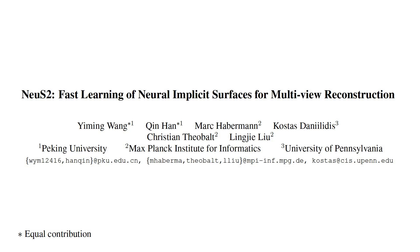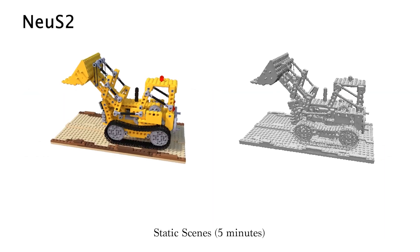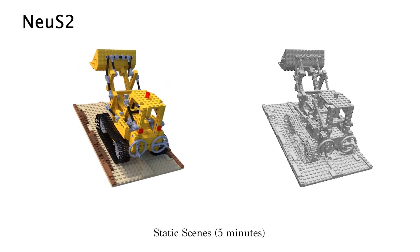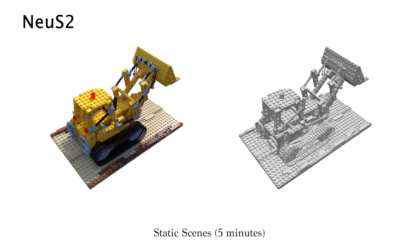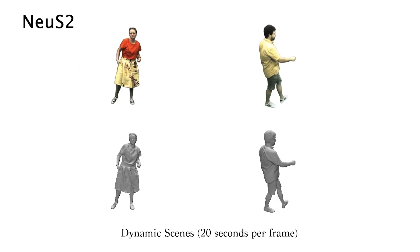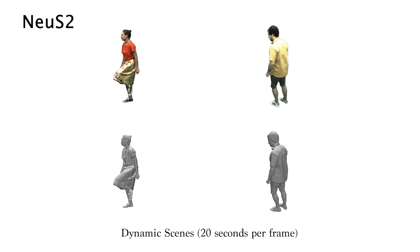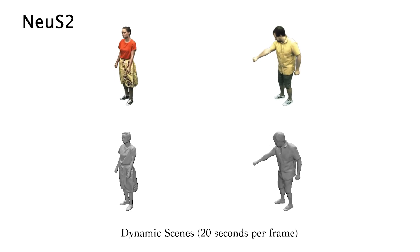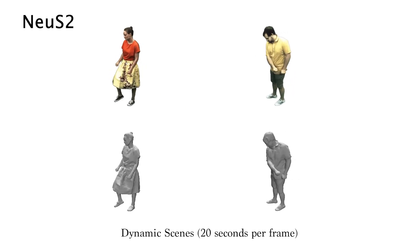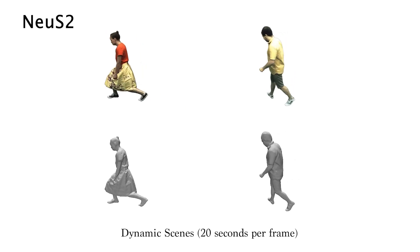We propose NuS2: Fast Learning of Neural Implicit Surfaces for Multi-View Reconstruction. It can reconstruct a static object in minutes and a moving object sequence in up to 20 seconds per frame on a single GPU.